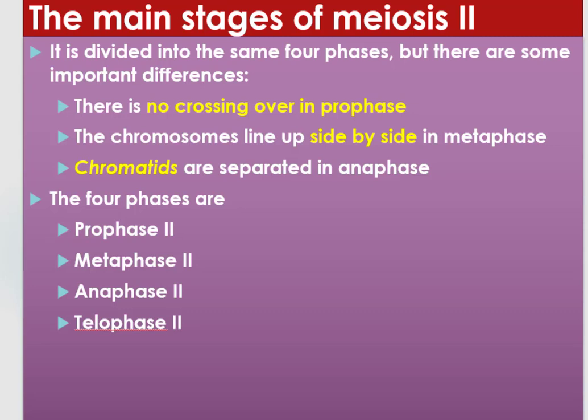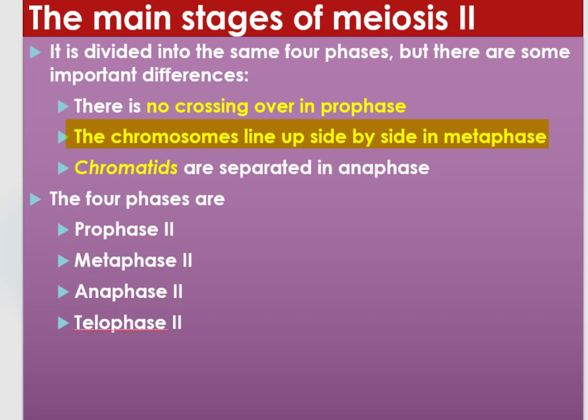Meiosis 2 is divided into the same four phases as meiosis 1, but there are some important differences. First, there is no crossing over in prophase 2 — crossing over only occurred in meiosis 1 at prophase 1. The chromatids line up side by side in metaphase 2, but in meiosis 1 at metaphase 1, chromosomes line up on the equator or metaphase plate.